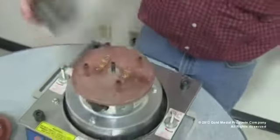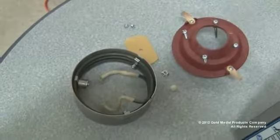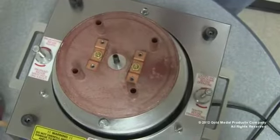Remove the band assembly as a unit. This will be installed later. At this point, remove any sugar buildup from the upper spinner head. No further disassembly is required.